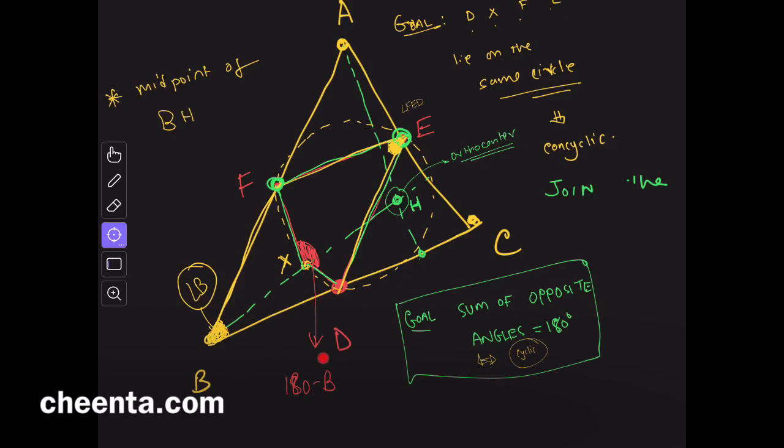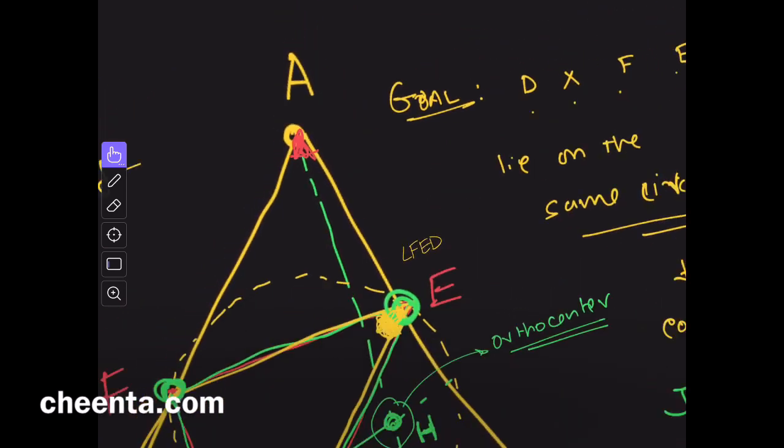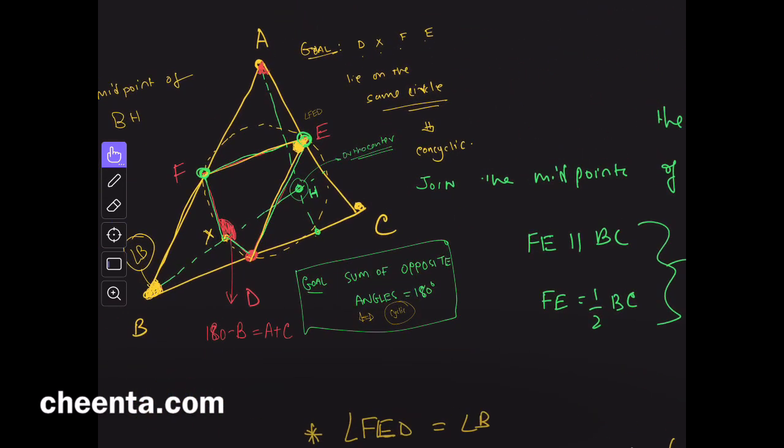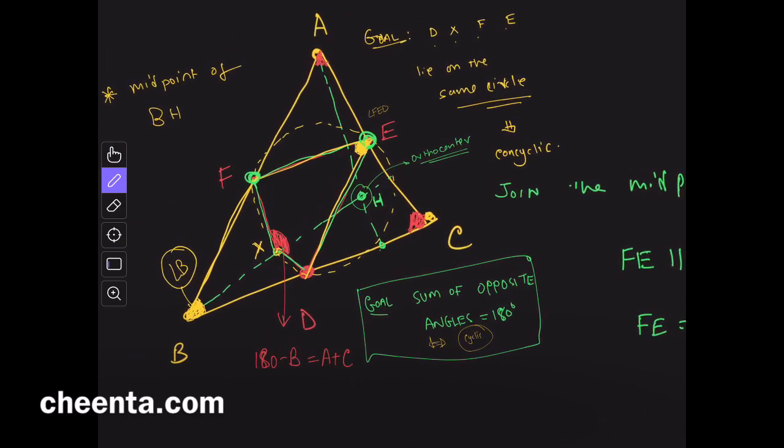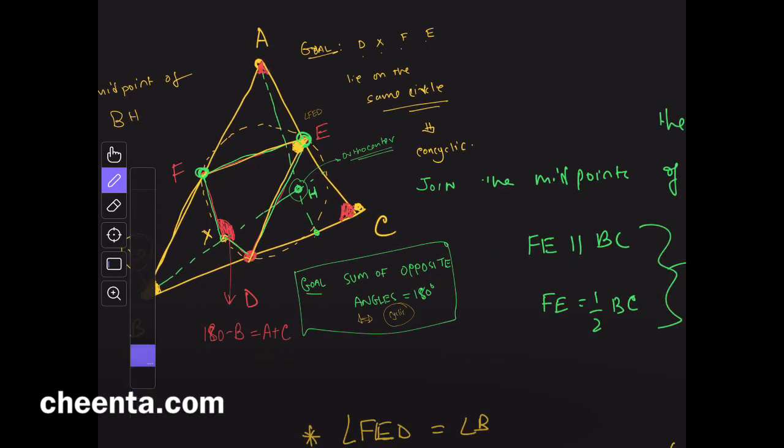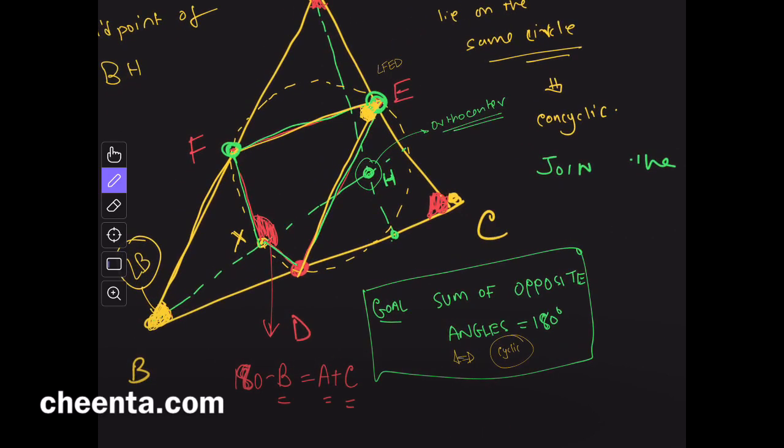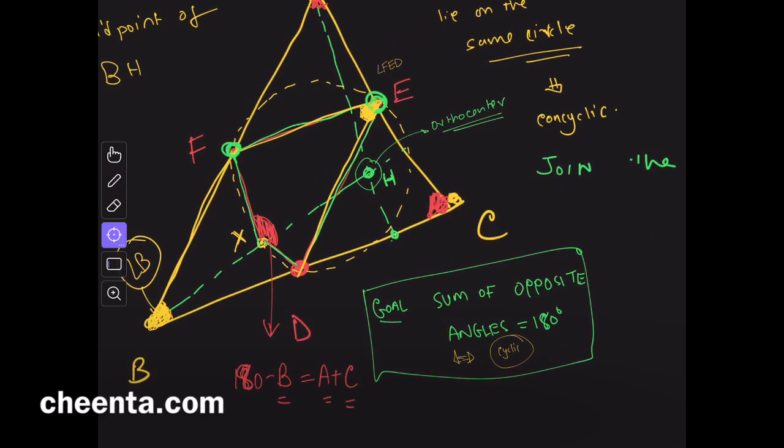Now, 180 minus B, we want to show that this angle is 180 minus B. 180 minus B is same as A plus C. That is, this angle right here, angle A, and add to that angle C. Why? This is a very common thing that we use often in geometry, that three angles of a triangle add up to 180 degree. So, if you want to show something is 180 minus B, show that that angle is just the sum of the other two angles of the triangle.